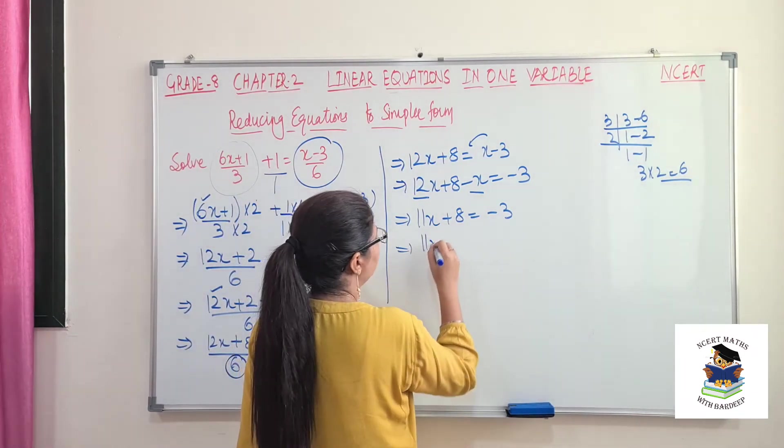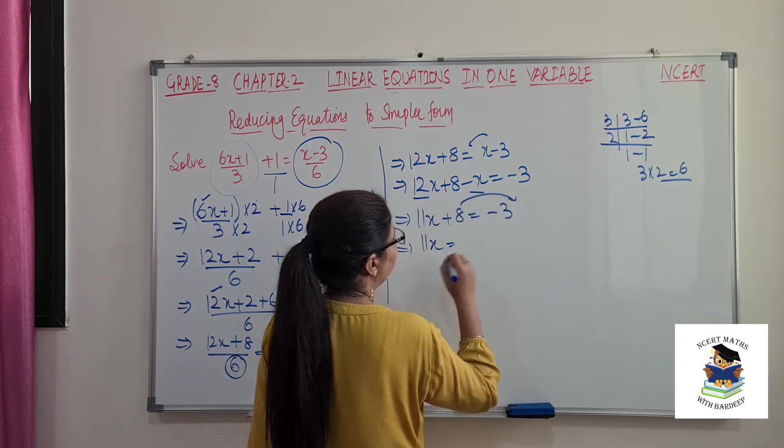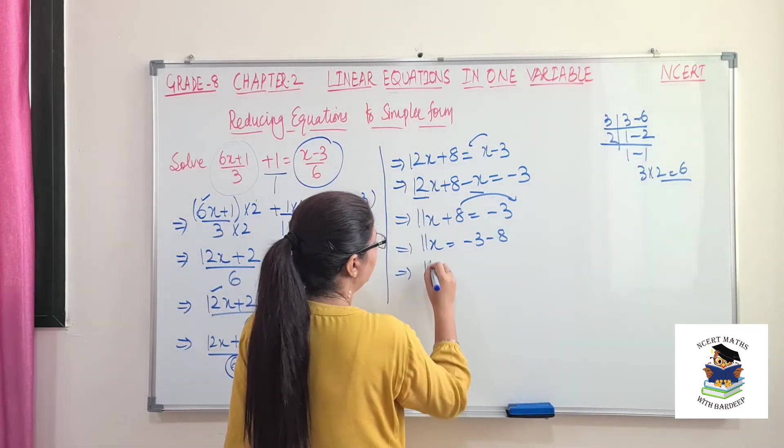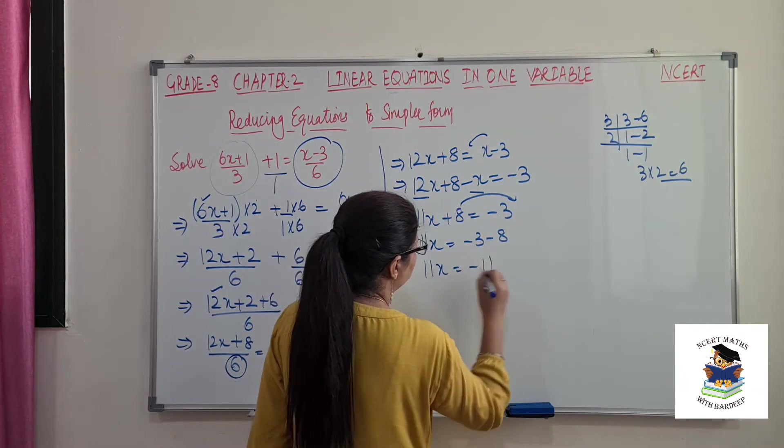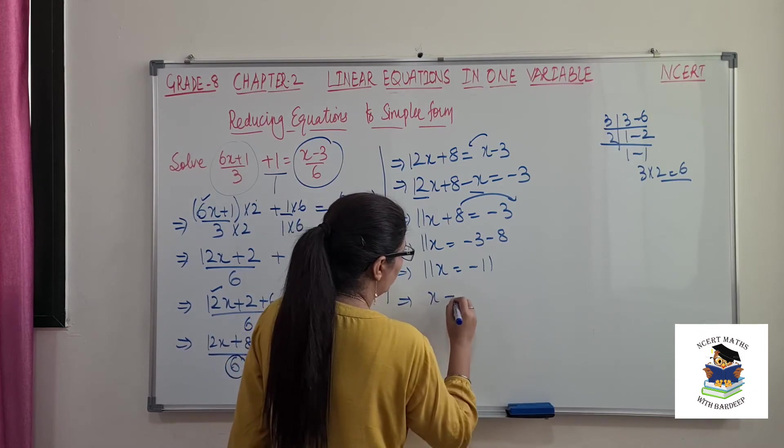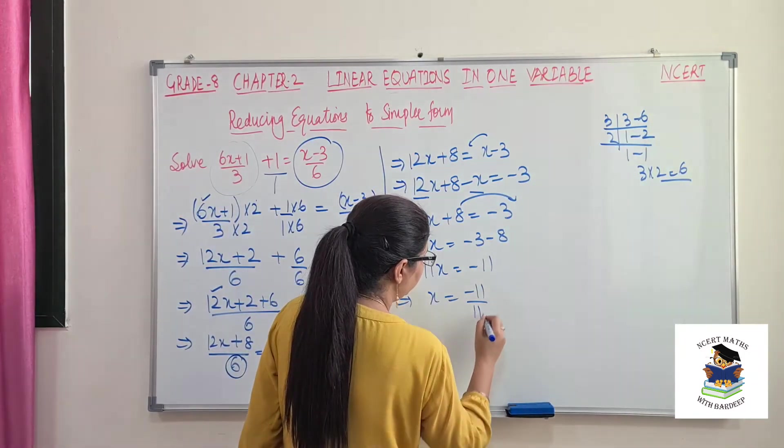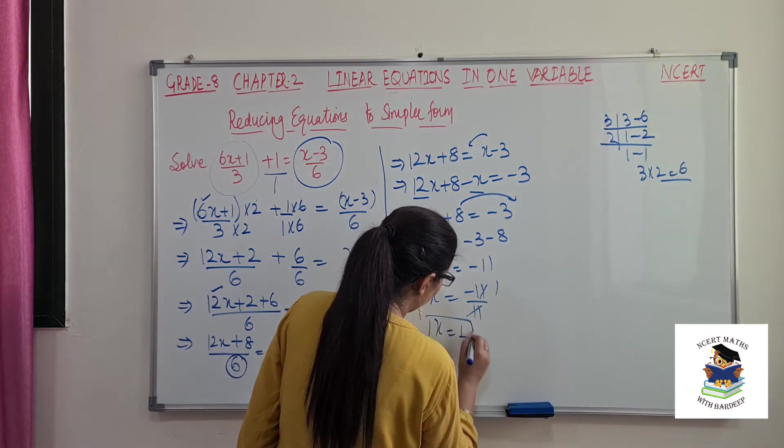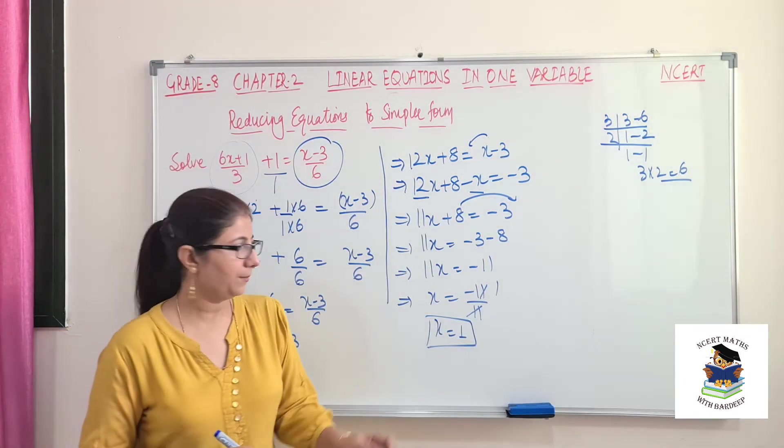So now 11x will be kept here, this 8 will go to other side, this is minus 8. And 11x = -11. So what is x then? 11 over 11. So solution for this equation is x = 1.